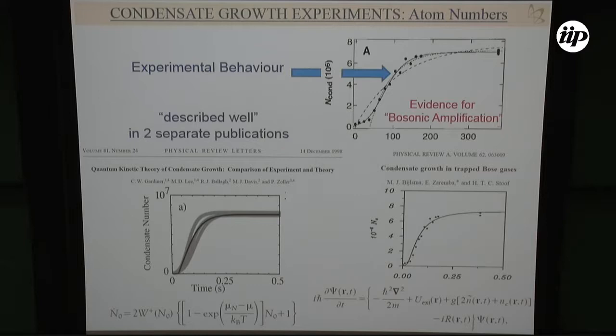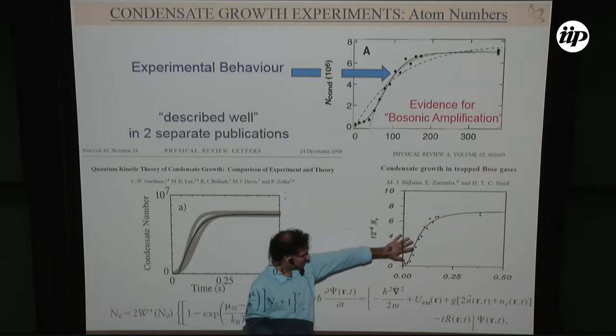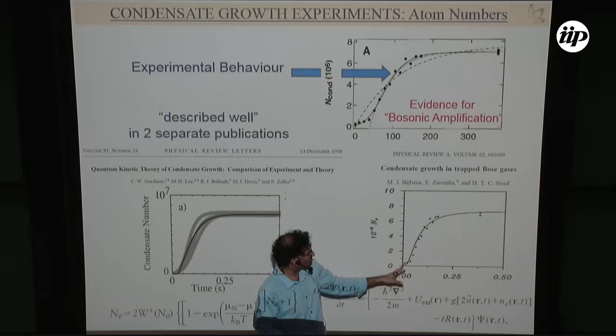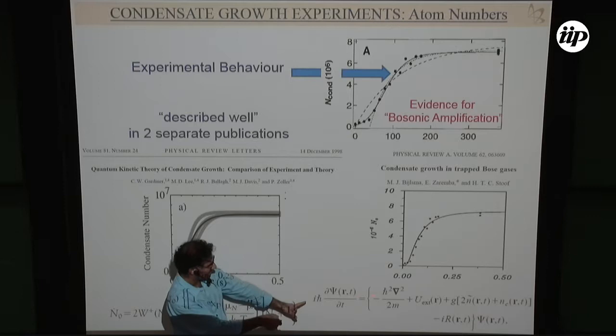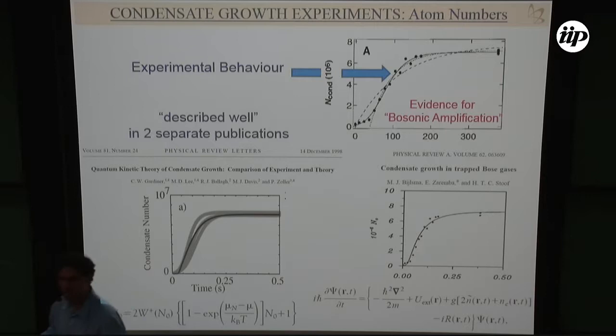There have been two different theories that explained this data. One accounts for spontaneous and stimulated processes. The kinetic approach requires starting with a small seed — if you start with zero, there's nothing to give you a non-zero condensate. But if you put in a seed, you can still capture the growth. It's quite remarkable that a theory assuming you already have a small condensate can capture condensate growth so well.